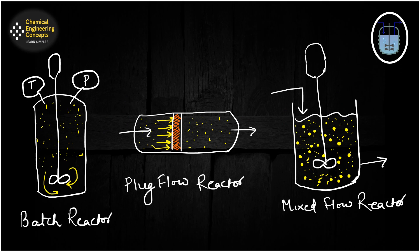Now let's consider macro mixing and micro mixing in different ideal reactors: the batch reactor, the plug flow reactor, and the mixed flow reactor. For the batch reactor filled with a macro fluid, each aggregate or packet acts as its own little batch reactor. Since all aggregates spend the same amount of time inside the reactor, the conversion is the same for all aggregates — identical to what you would obtain from micro fluids. Therefore, the degree of segregation has no effect on conversion or product distribution.